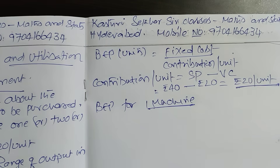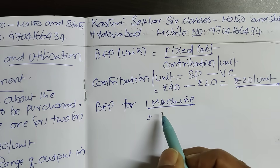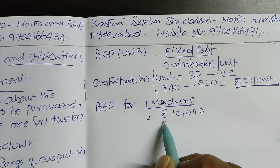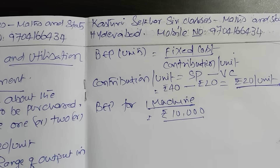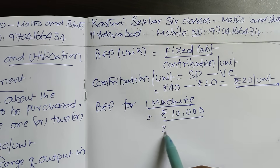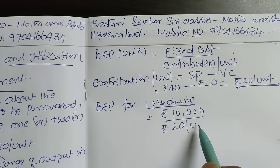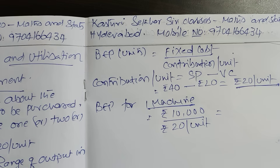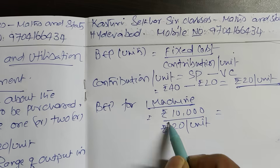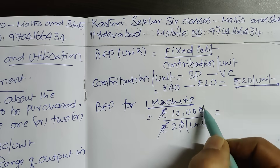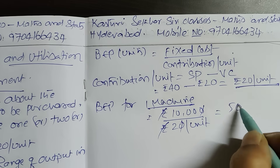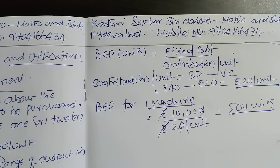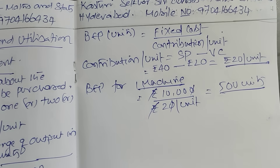Now, breakeven point for one machine: fixed cost is Rs.10,000 and contribution per unit is Rs.20. So breakeven point equals Rs.10,000 divided by Rs.20 per unit, which equals 500 units.